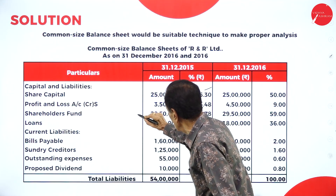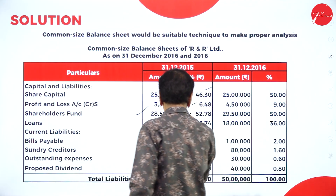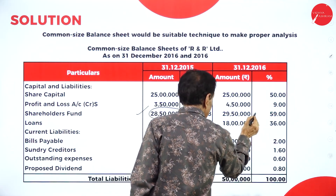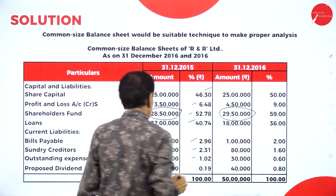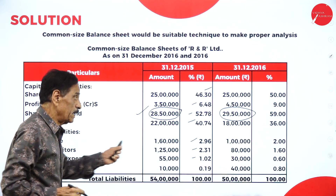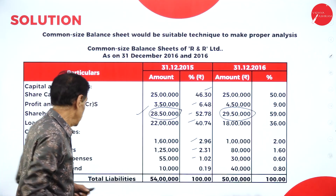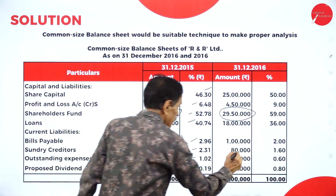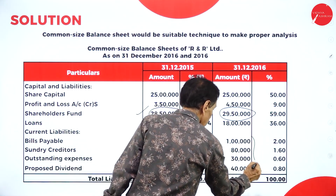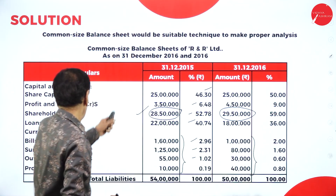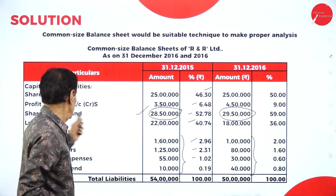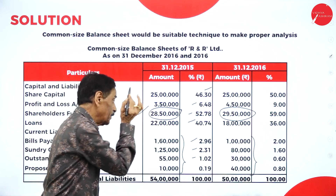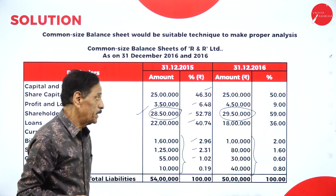Share capital and profit and loss account goes to shareholders' fund. Loans are separated. These are all the current liabilities. Share capital and profit and loss goes to shareholders' fund, then the loan we have taken, and these are all the current liabilities.